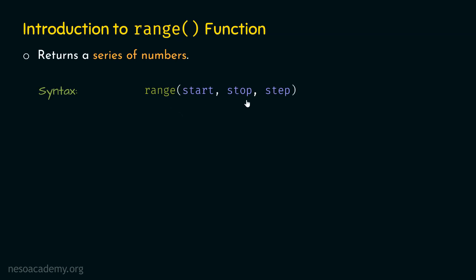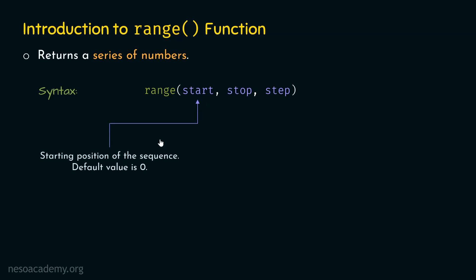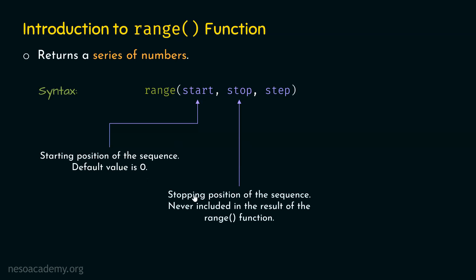The syntax is: range(start, stop, step). These are the three arguments we can pass to the range function. The first argument is start, which represents the starting position of the sequence. The default value is zero, and this argument is optional. The next argument is stop, which represents the stopping position of the sequence.